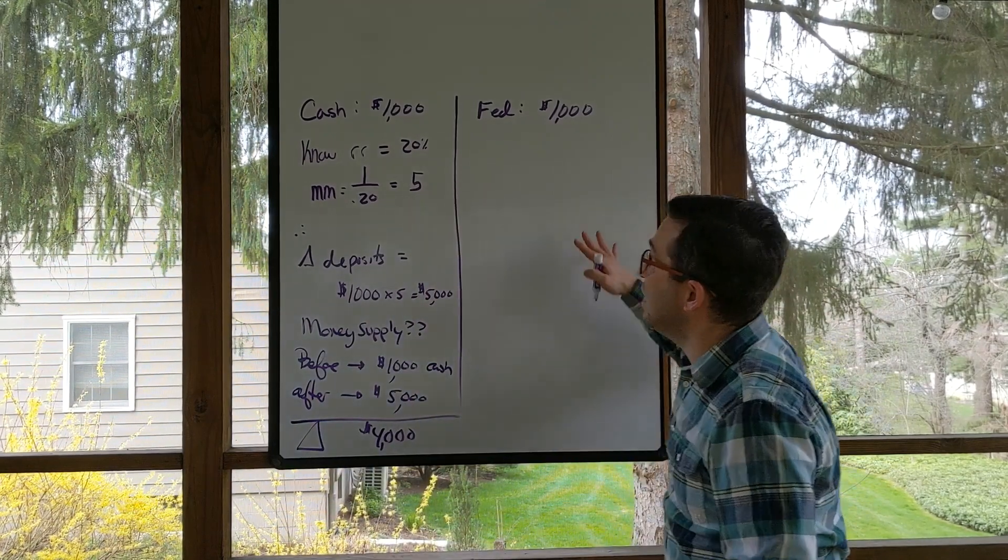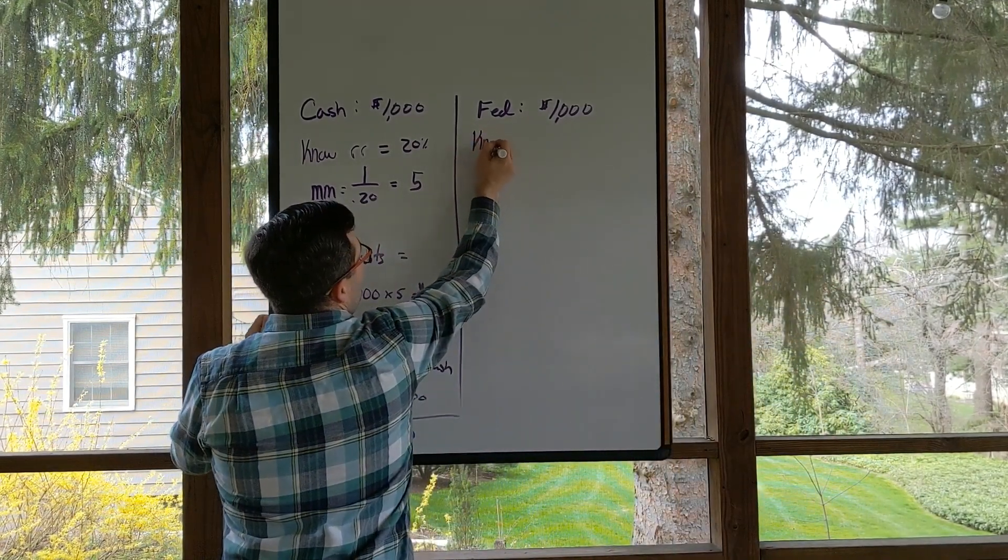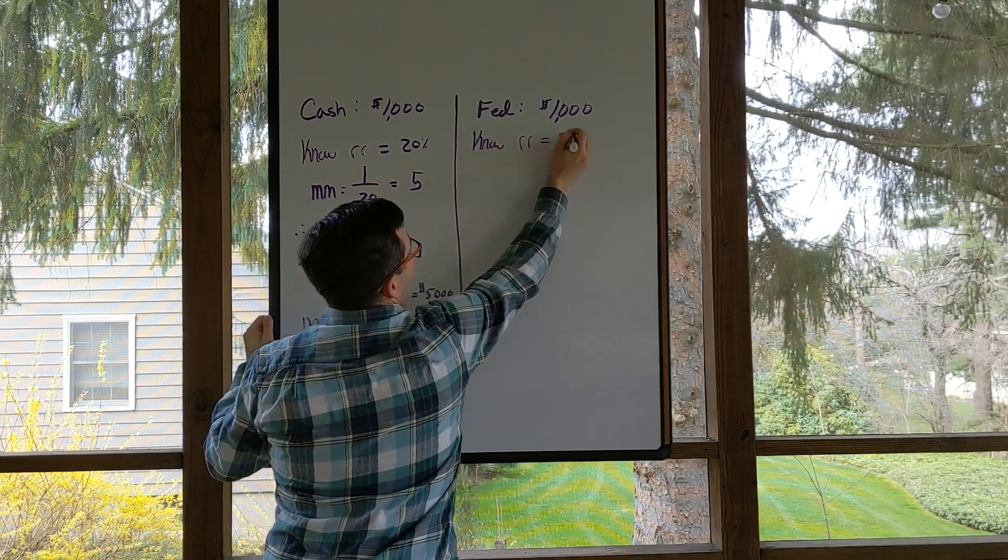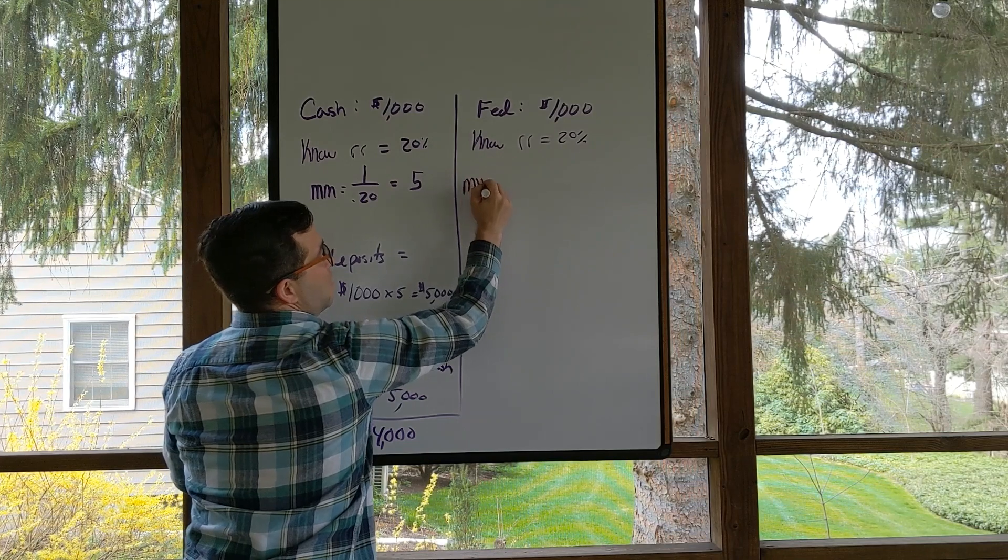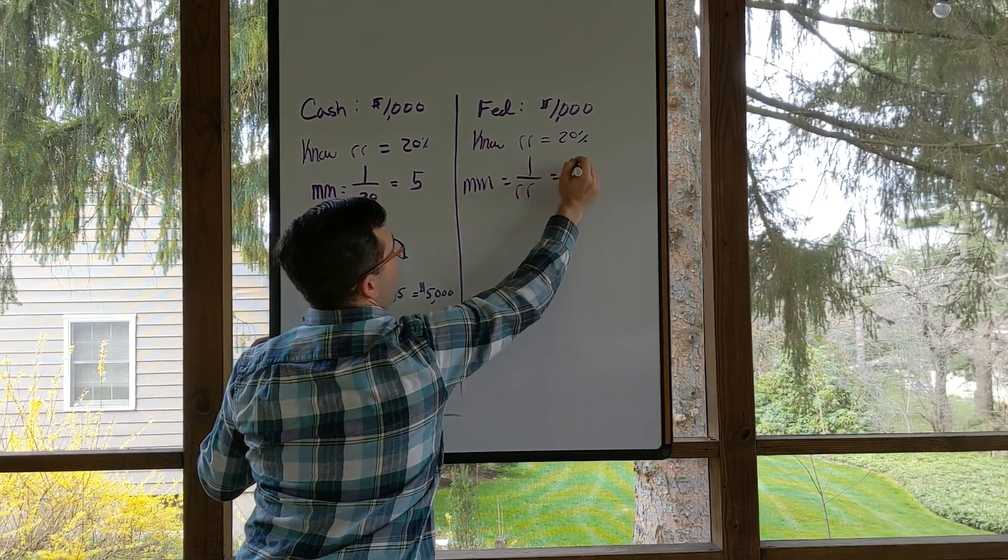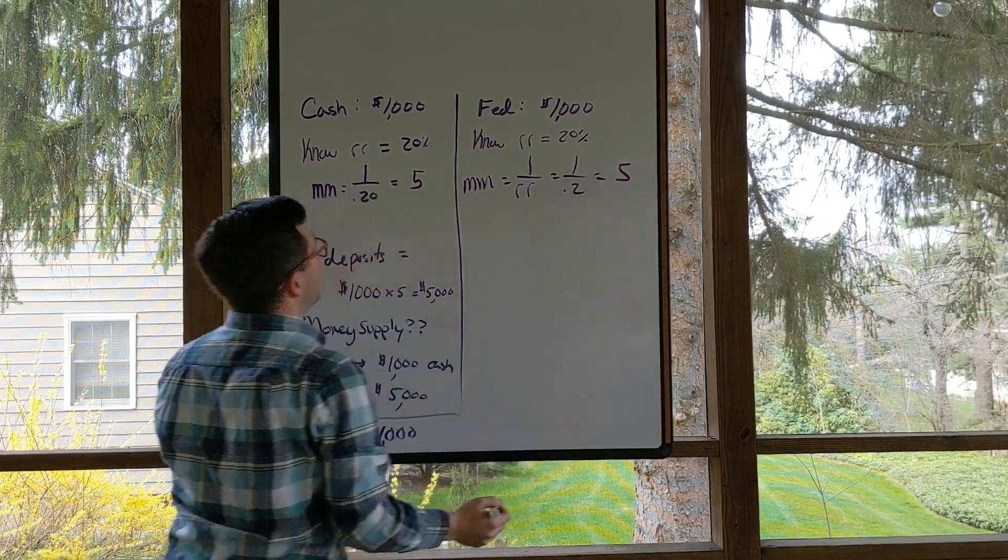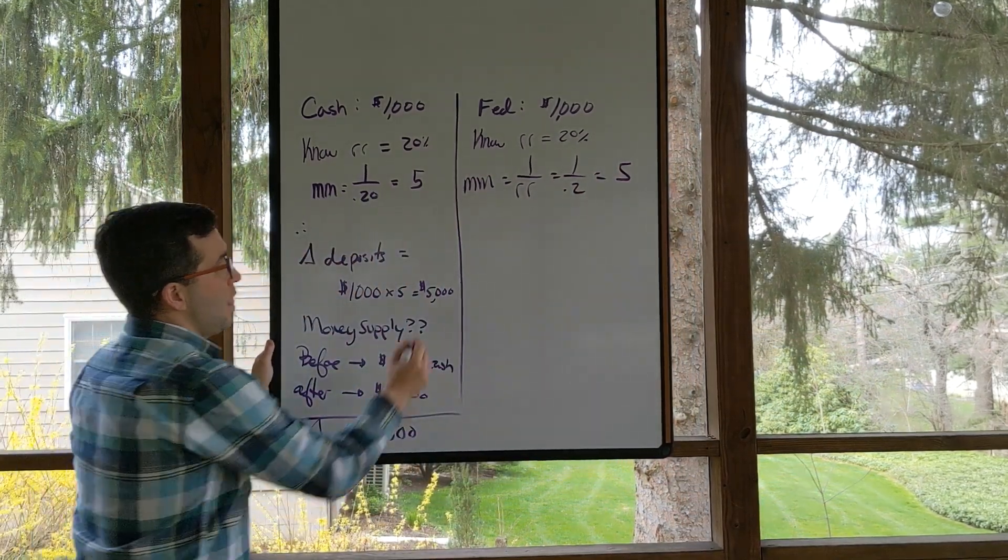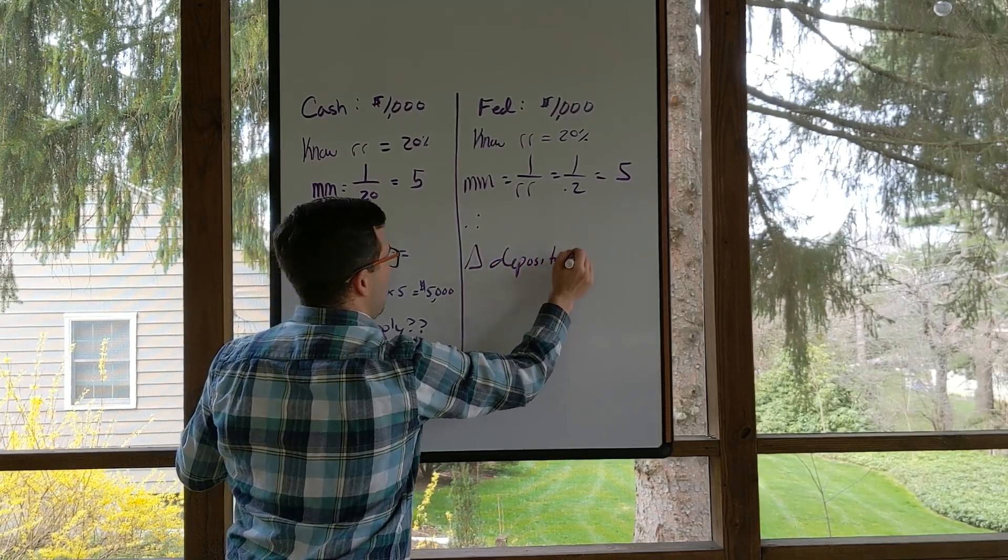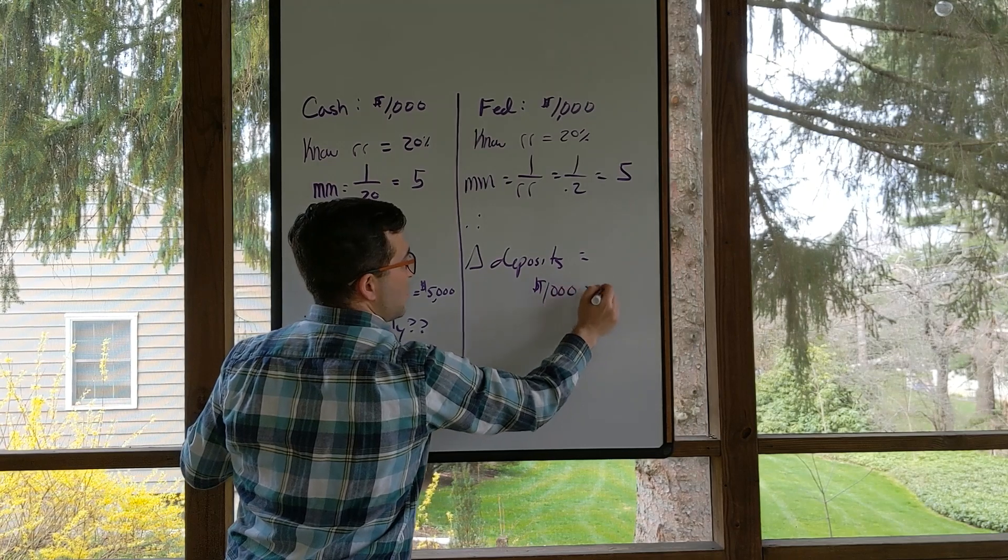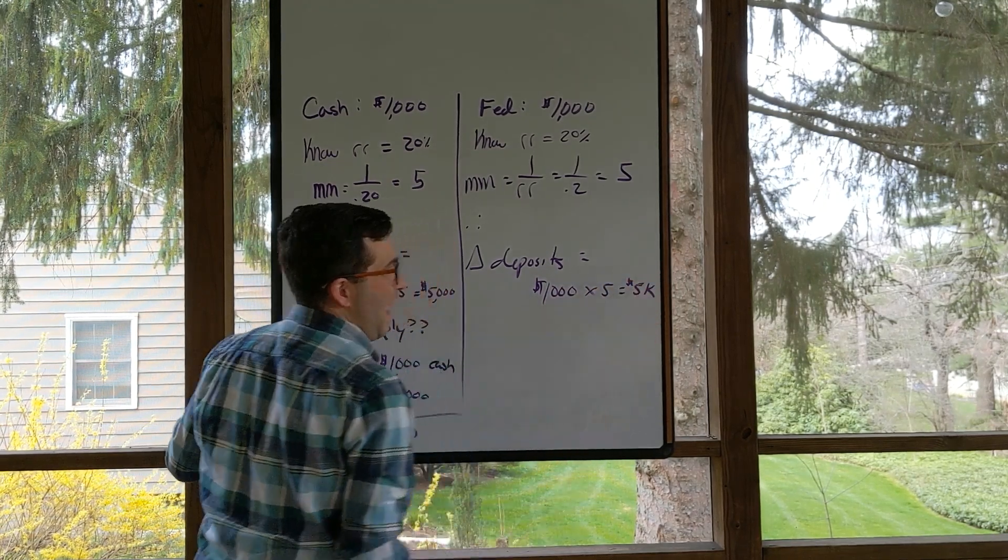We do the exact same thing over here for the Fed. If we know the required reserve ratio is 20% and we have this money multiplier, which is equal to 1 over the required reserve, which is 1 over 0.2, which is equal to 5. Therefore, again, my change in deposits is going to equal that $1,000 times 5, which is $5,000.